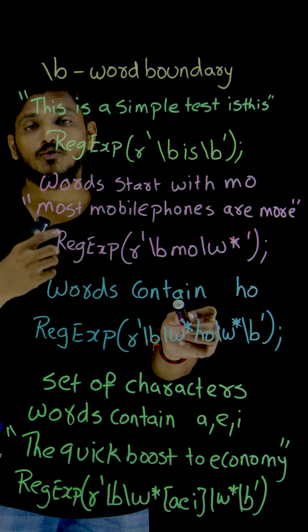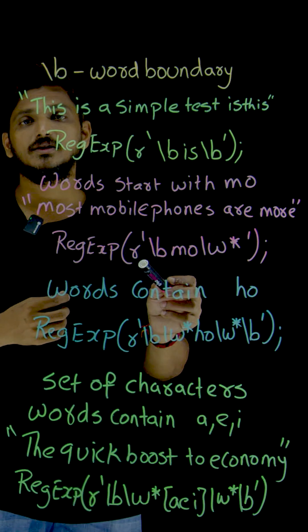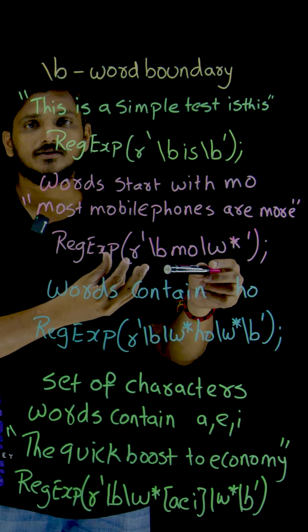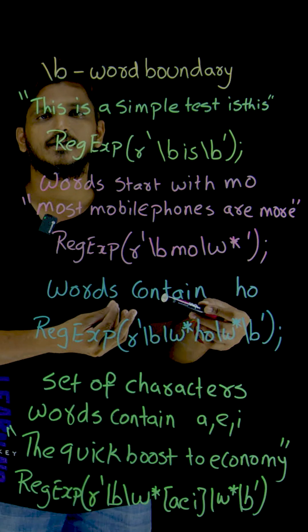Slash W means word character. Star means you can find any number of word characters—zero or any number of word characters.